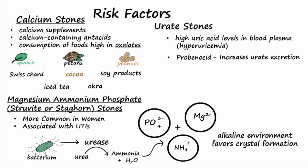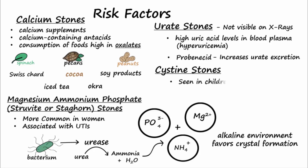Unlike other urinary stones, urate stones are not visible on x-ray films. Cysteine stones are the least common type at less than 1% overall, but they do represent a significant cause for stones in children. Cysteine stones come about due to genetic disorders that result in decreased cysteine reabsorption in the PCT, which leads to cystinuria. These higher concentrations of cysteine in the urine favor crystal formation.